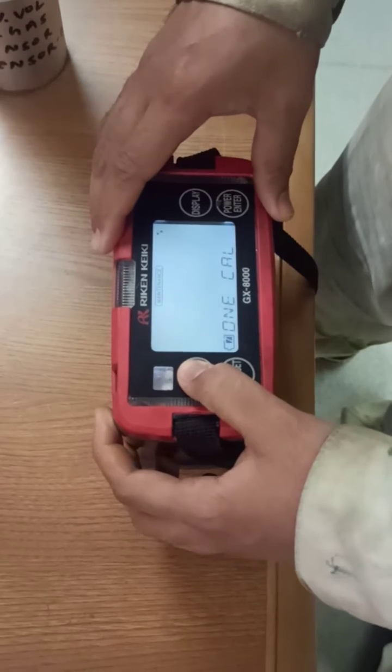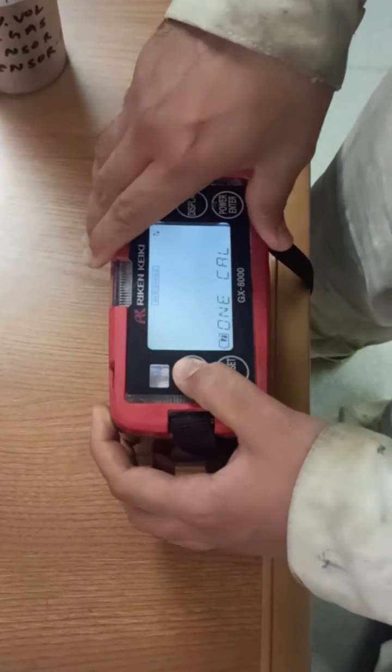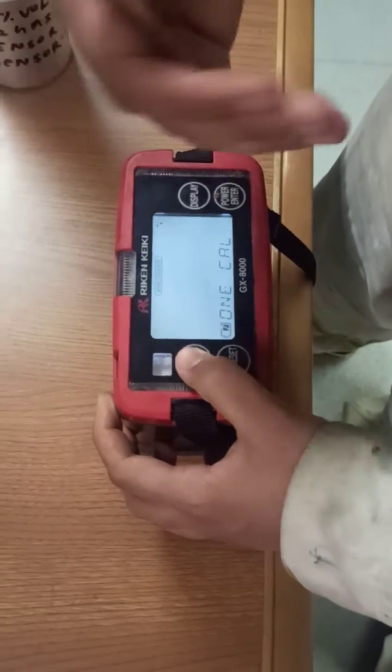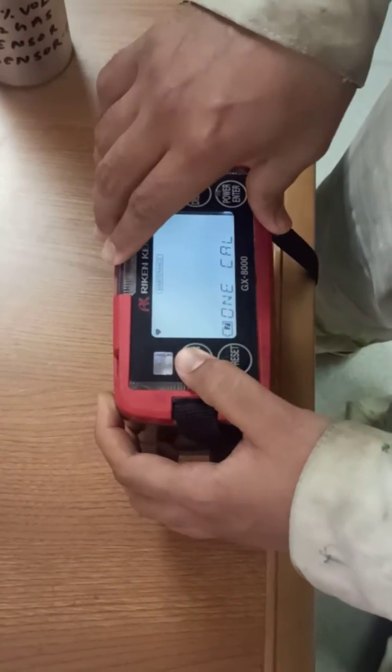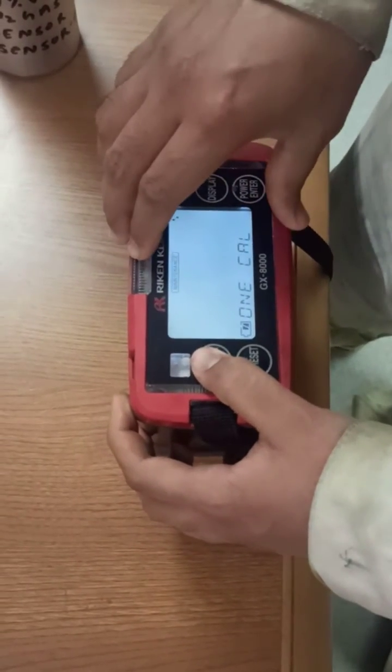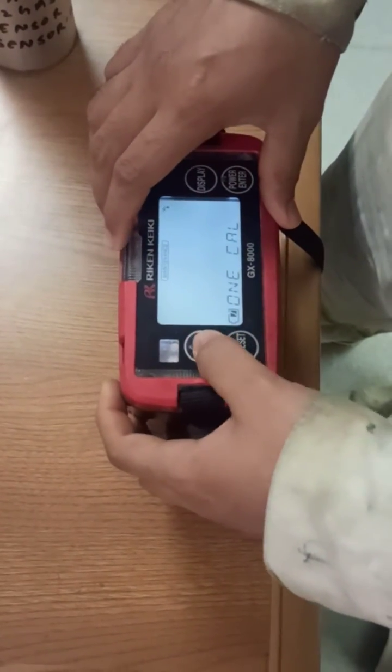After one cal, it's advisable to do air calibration. After air calibration, the gas which we put inside by the span gas bottles would be purged out by the gas meter. Let's start.